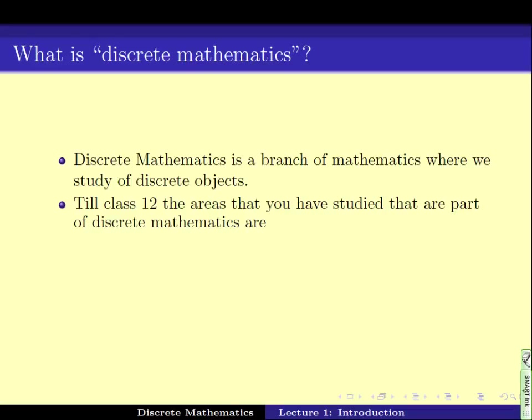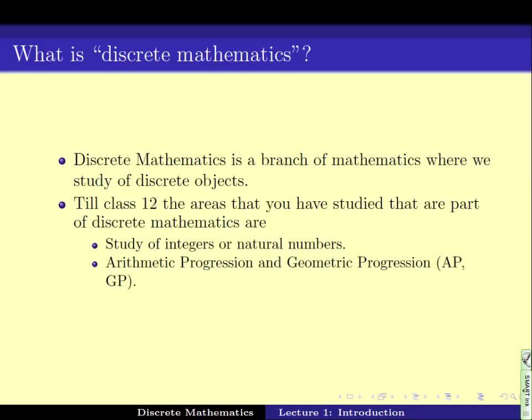So, till your class 12, you have done a number of subjects in math, out of which subjects like study of integers and natural numbers, arithmetic progression, geometric progression, etc., permutation and combination, all these comprise subjects related to discrete mathematics.